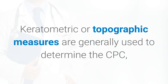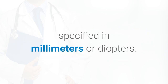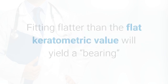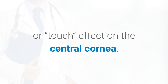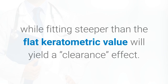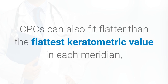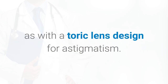Keratometric or topographic measures are generally used to determine the CPC, specified in millimeters or diopters. Fitting a rigid lens to the flattest keratometric value is called fitting on K, or an alignment fit. Fitting flatter than the flat keratometric value will yield a bearing or touch effect on the central cornea, while fitting steeper than the flat keratometric value will yield a clearance effect. CPCs can also fit flatter than the flattest keratometric value in each meridian, as with a toric lens designed for astigmatism.